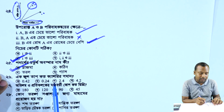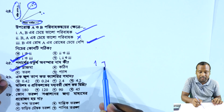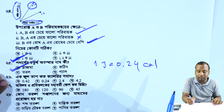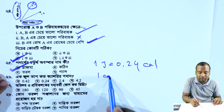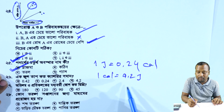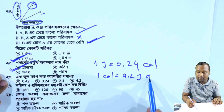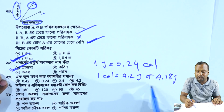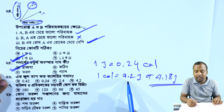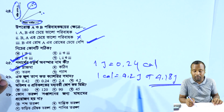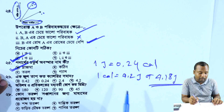1 Joule is 0.24 calories. 1 Joule is 4.18 calories. 1 Joule is 4.2 calories. 1 Joule is 4.15 calories.